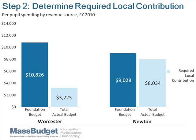Step 2: determine the required local contribution. The state calculates how much an individual community can reasonably contribute towards its foundation budget amount, and it is based primarily on the property wealth and income levels of residents in the community. In fiscal year 11, for example, the calculation was run by adding 0.3% of the total property wealth in a community to 1.4% of the total income levels in that community. In this example, Newton has a higher ability to contribute than does Worcester, because it both has higher property wealth and higher income values than does Worcester.